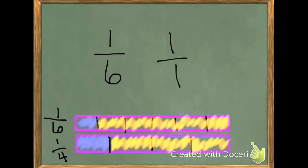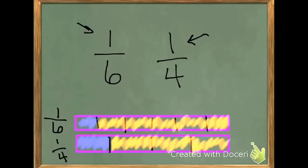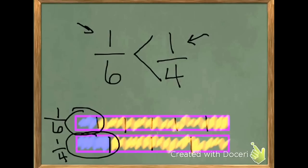I can tell by looking at this picture which fraction is less. If you look, the numerators are the same. When the numerators are the same, we look at the denominators. Remember, the denominator tells you the total number of equal parts. The smaller the denominator, the bigger the piece, because there's less people to have to share with. So that means that 1 sixth is less than 1 fourth.